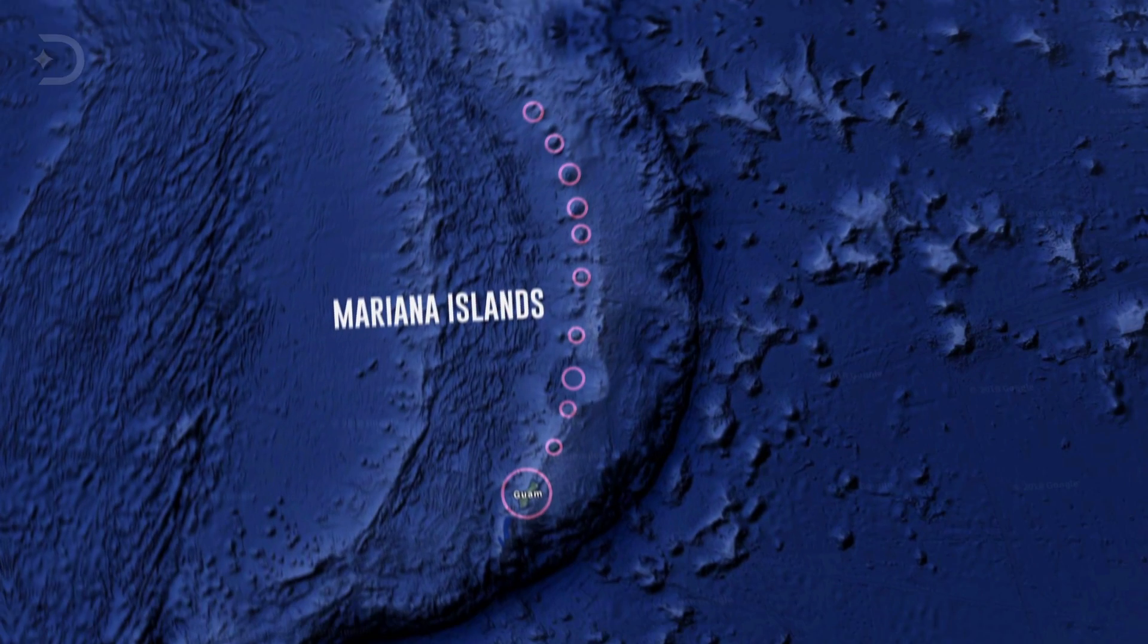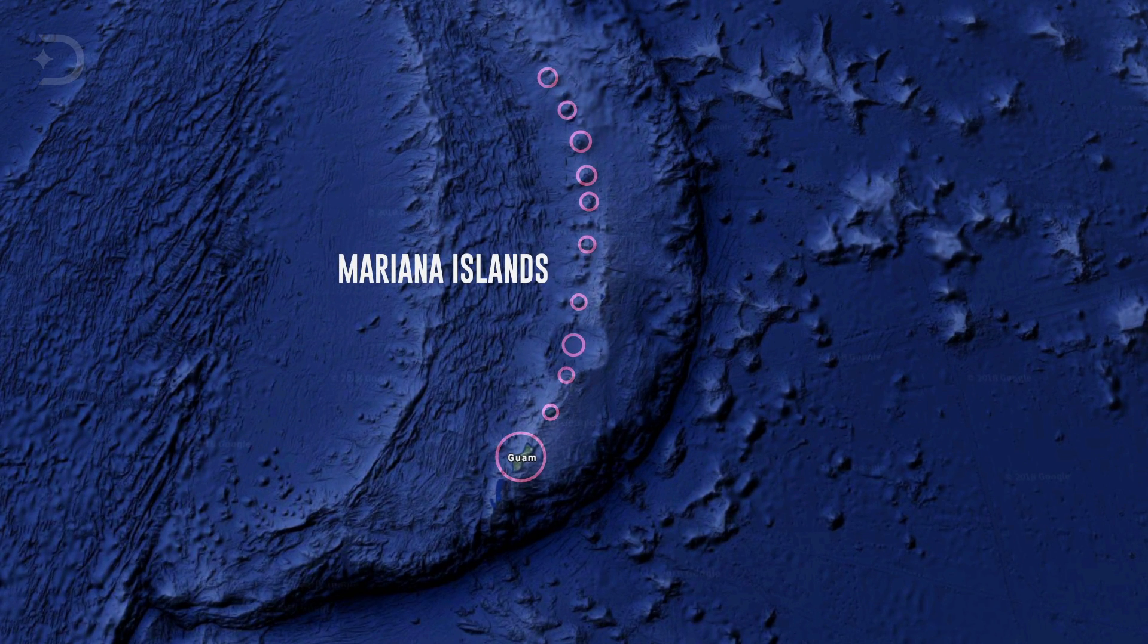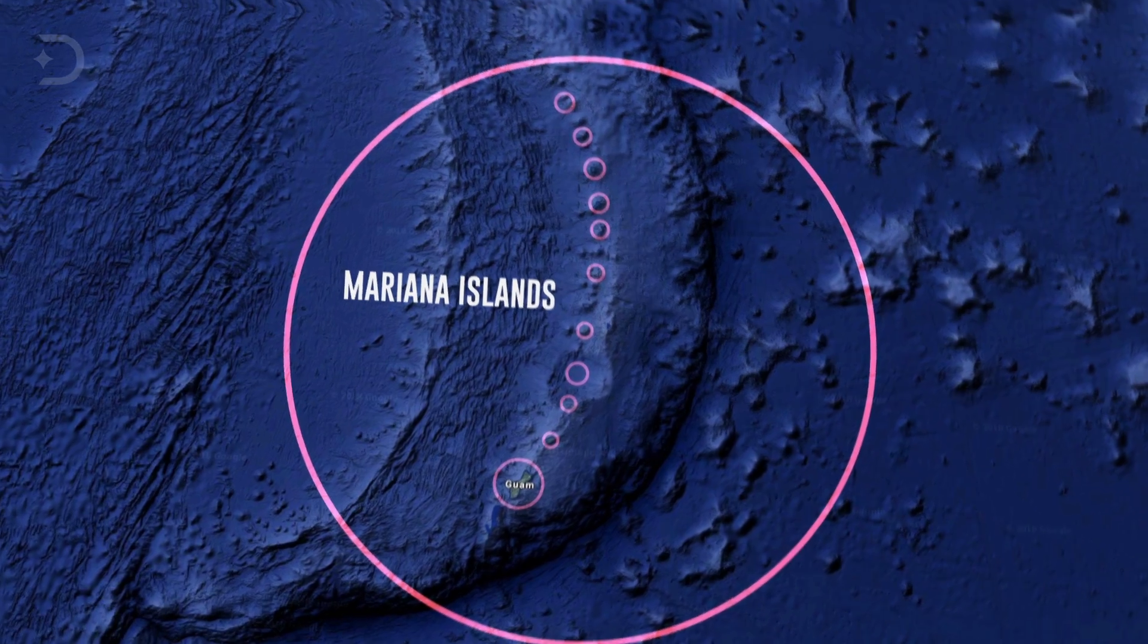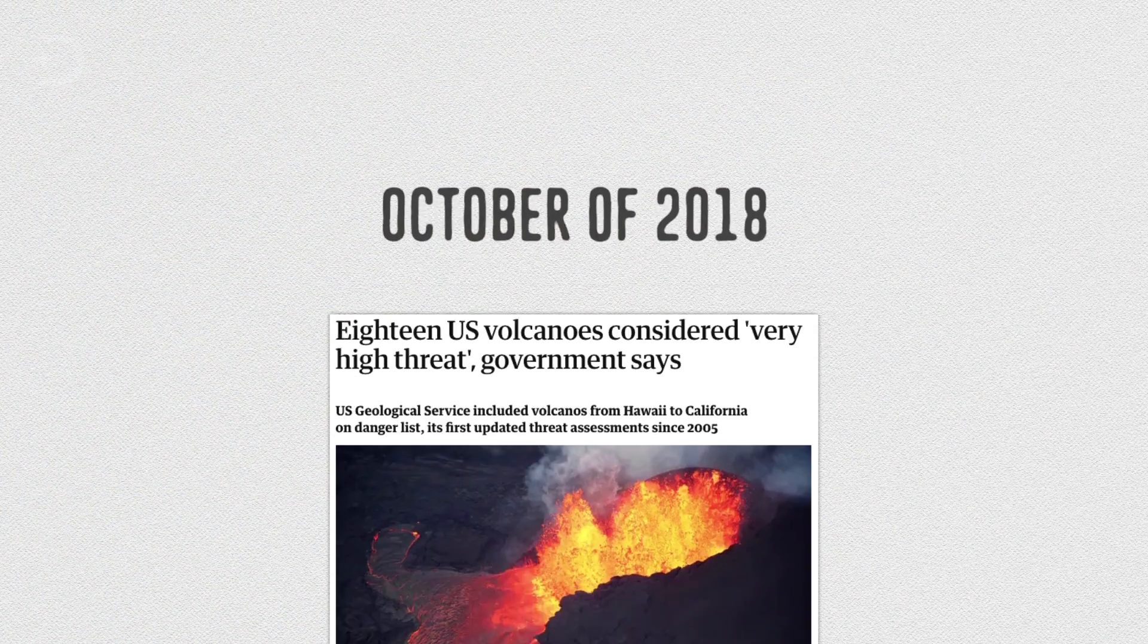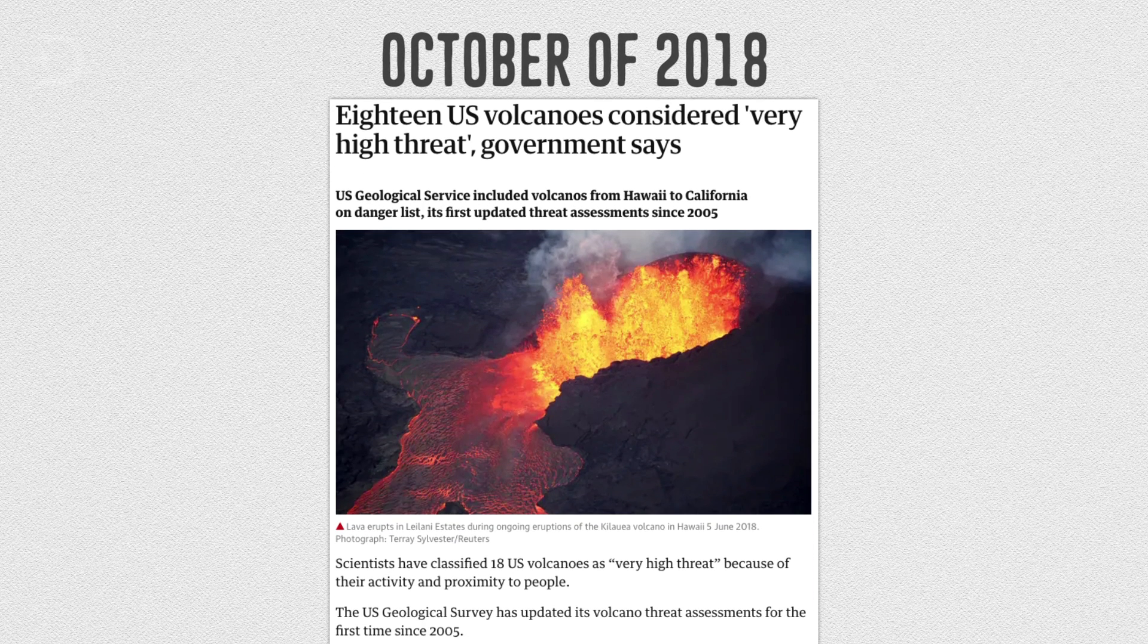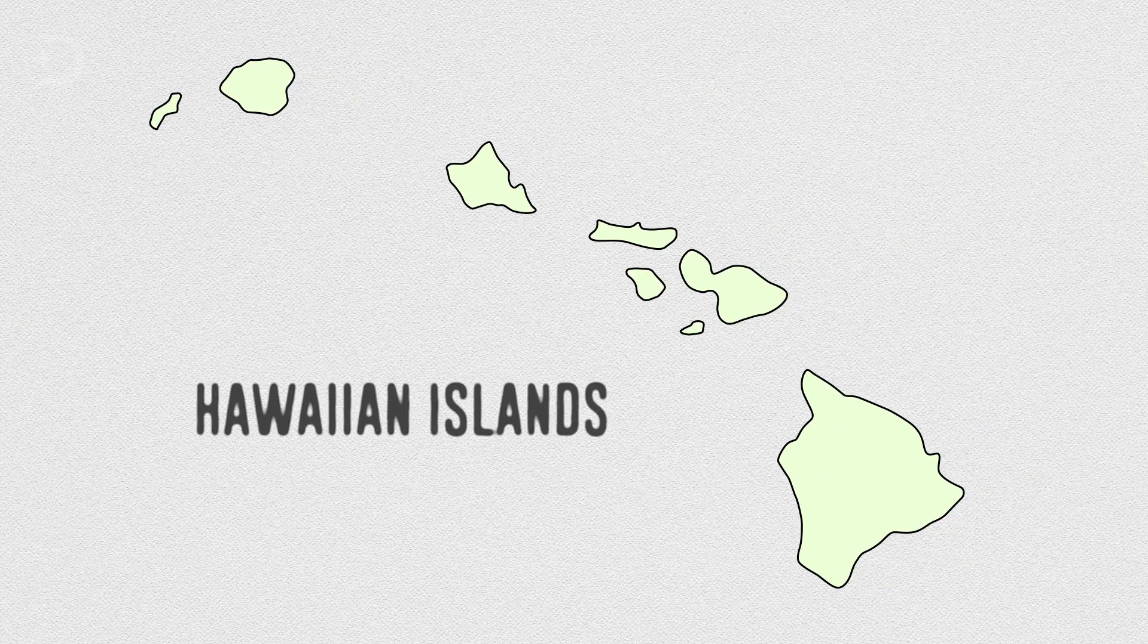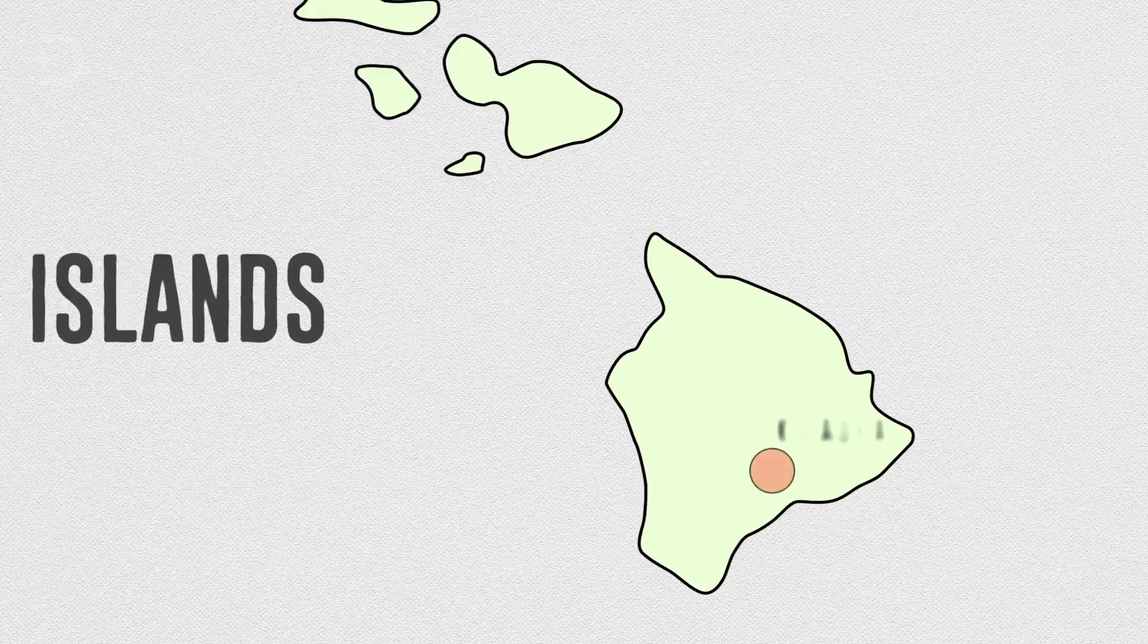It is this same violent eruption of magma that created the Mariana Islands. But the eruptions caused by this process don't just happen close to Mariana. They can happen hundreds or even thousands of miles away. In October of 2018, 18 U.S. volcanoes were classified as a very high threat because of what is happening inside them. That danger list was topped by Hawaii's Kilauea, which coincidentally has been erupting this year.